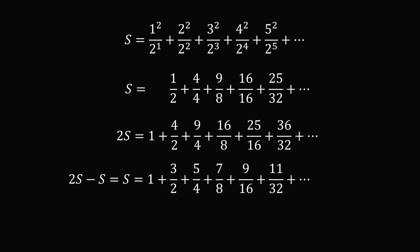So we have 2S minus S, which is equal to S, and this is equal to 1 plus 3/2, plus 5/4, plus 7/8, plus 9/16, and so on.